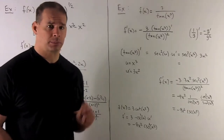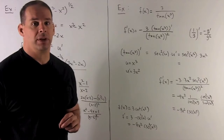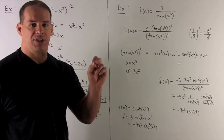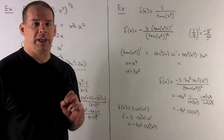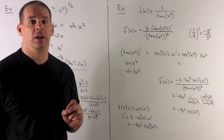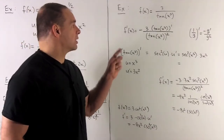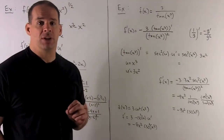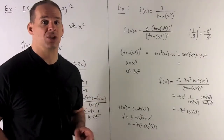One more — a little bit trickier. f of x equals 3 over tan x cubed. In general, our rule is: if I have a constant over g, say 1 over g, the derivative is minus g prime over g squared. So my first step is to write that out: minus 3 times tan x cubed prime, over tan x cubed quantity squared.